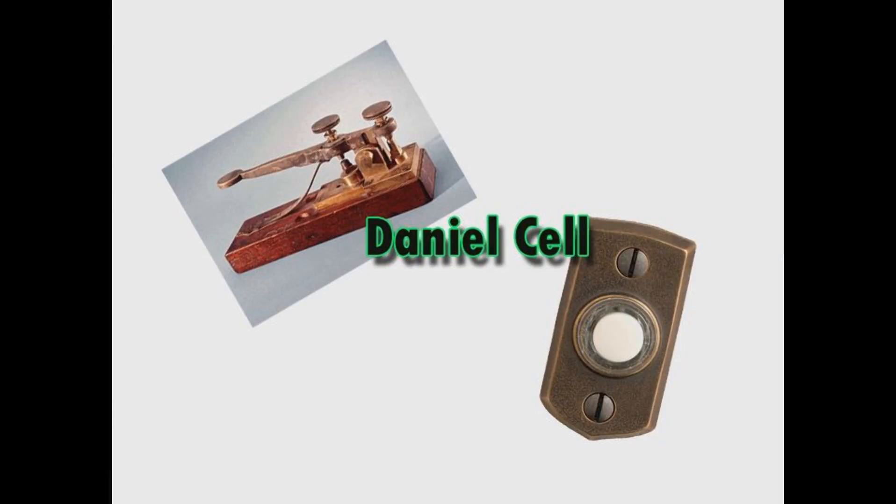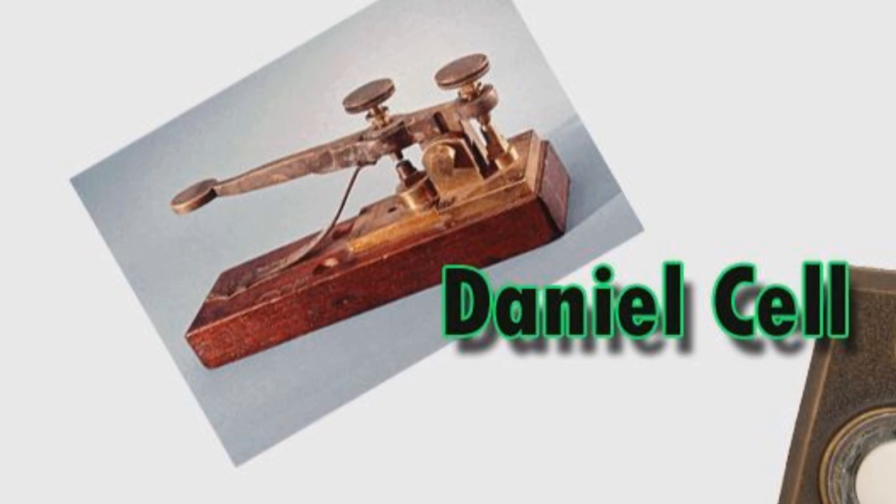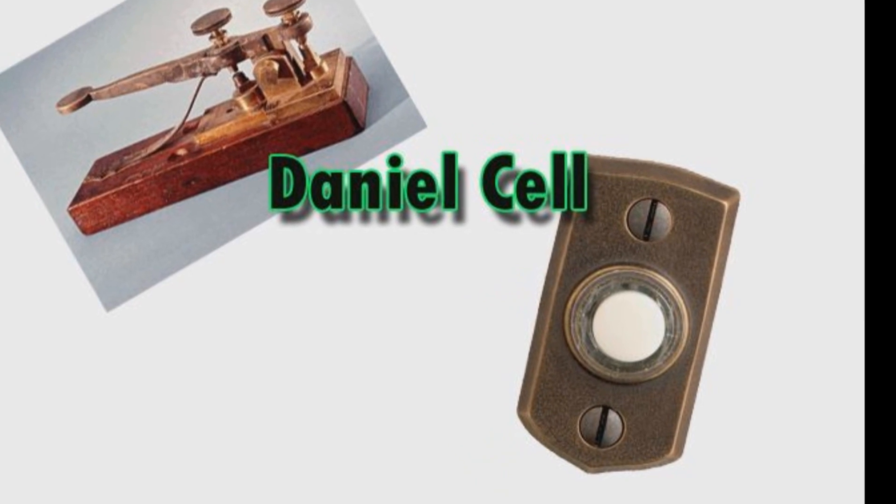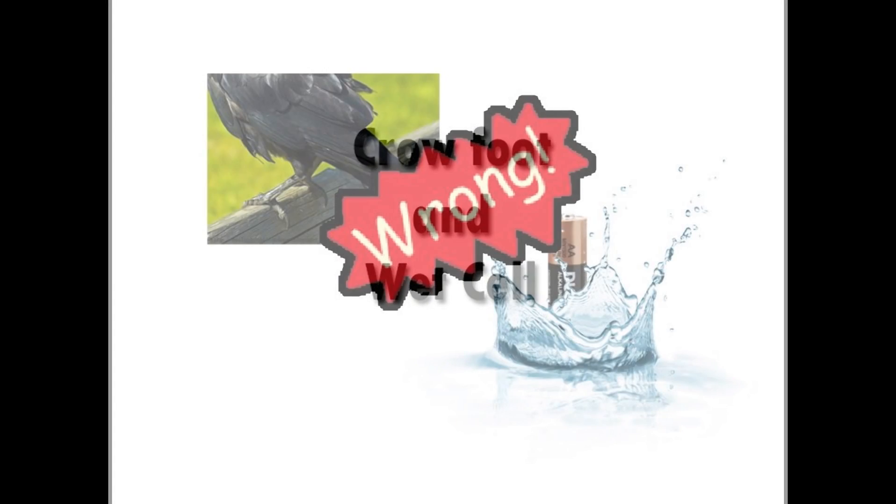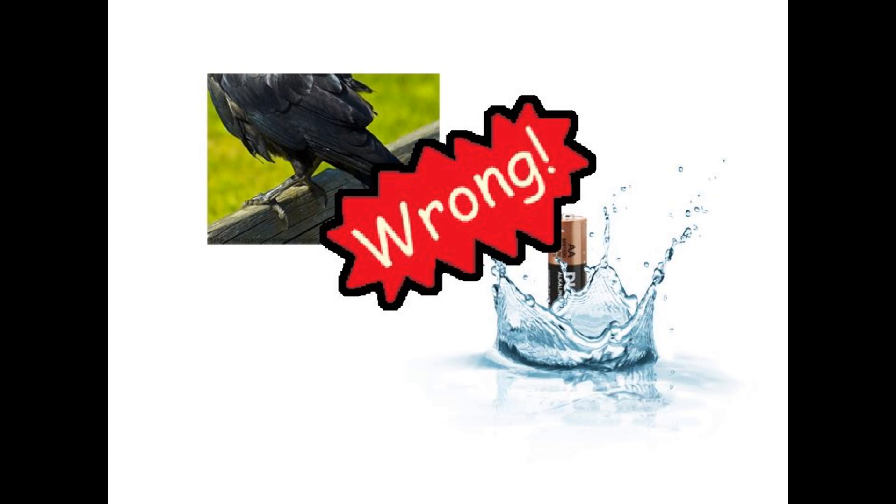In the 1800s, before the invention of the electric generator, the Daniel Cell was extremely popular and common for operating telegraphs and doorbells. The Daniel Cell also has two other names, Crowfoot and Wetzel. But here is the actual picture of a Daniel Cell.